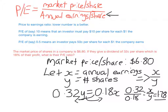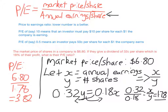For every one share in the company, they are earning $1.78. Now the P/E ratio is straightforward: market price per share ÷ annual earnings per share = $6.80 ÷ $1.78 = 3.82. That means the investor pays $3.82 per share for every $1 the company is earning. On its own 3.82 doesn't mean much, but you can compare it to the P/E ratio of other companies — a lower number is better. If another company has a P/E of 2, that would be a better investment.